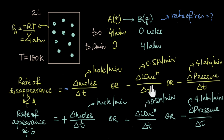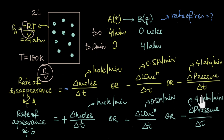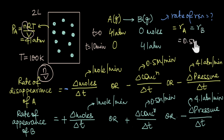We generally express rates in terms of concentration or pressure rather than moles, because as we'll see in a later video, rates of reactions depend on molecular density — the number of molecules per unit volume — rather than the absolute number of moles. Both concentration and pressure give us an idea about molecular density. So the rate of this reaction equals the rate of disappearance of A, which also equals the rate of appearance of B: 0.5 molar per minute, or 4.1 atm per minute, or 1 mole per minute.